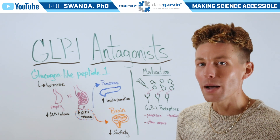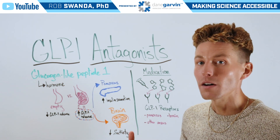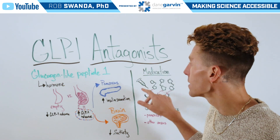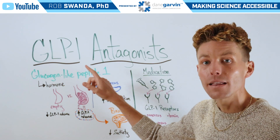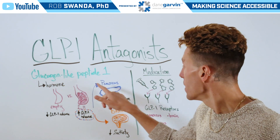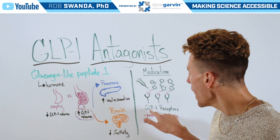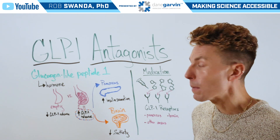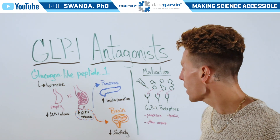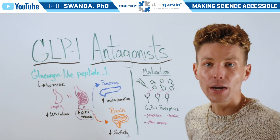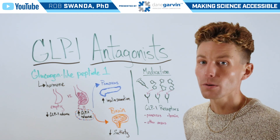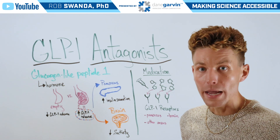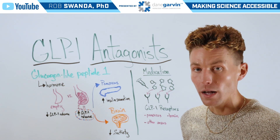When we think about this in terms of a therapeutic, GLP-1 antagonists mimic this protein so they can bind to GLP-1 receptors. Those might be present on the pancreas, on the brain, or in other parts of the body, and that's going to have two main effects as well.